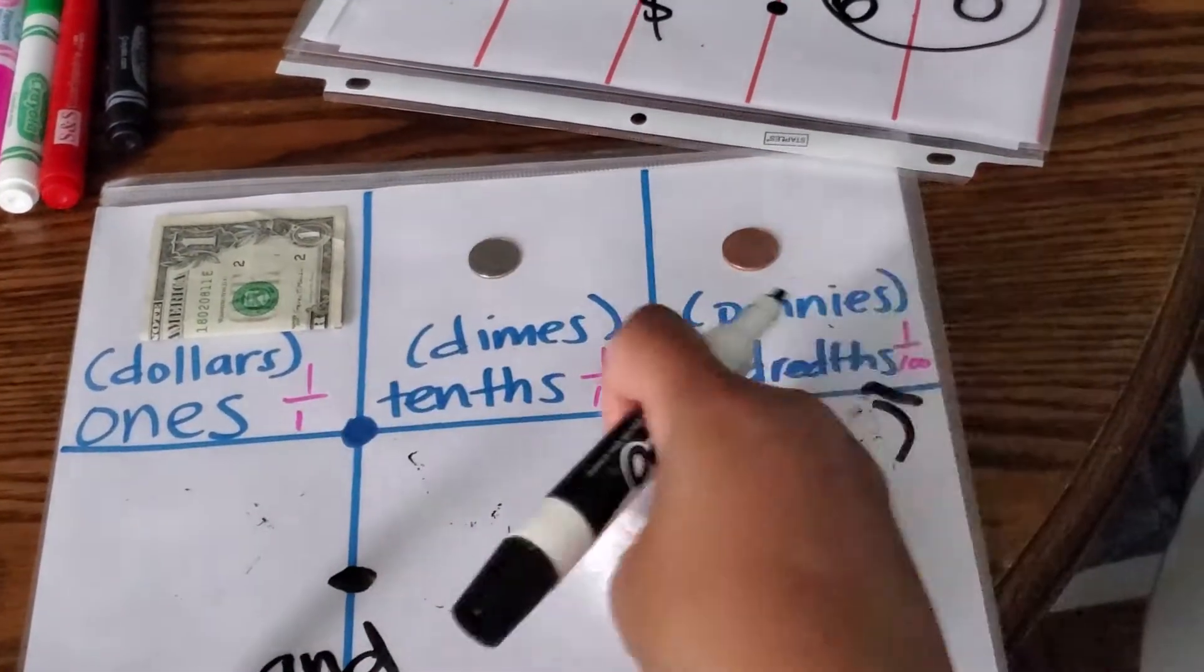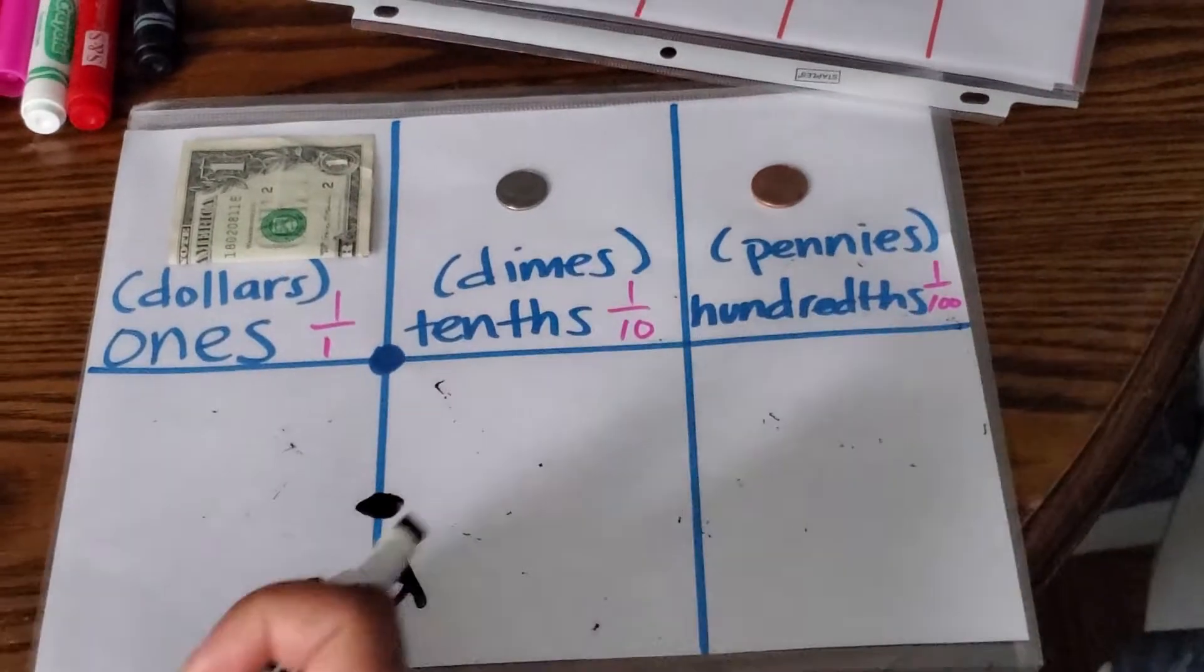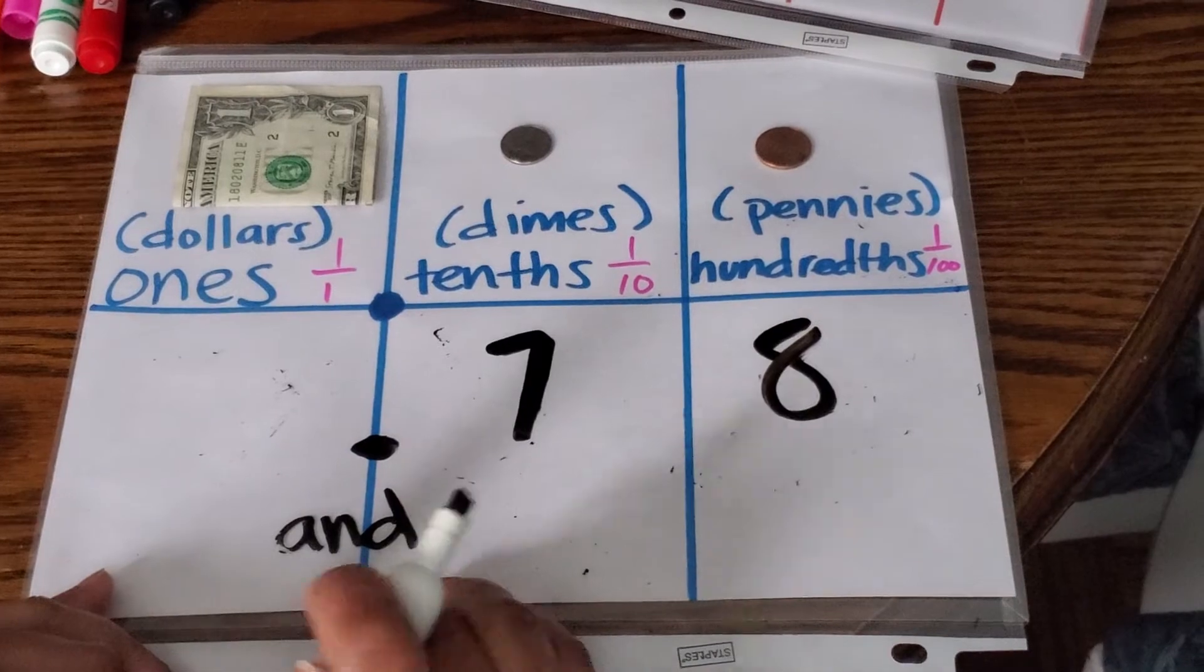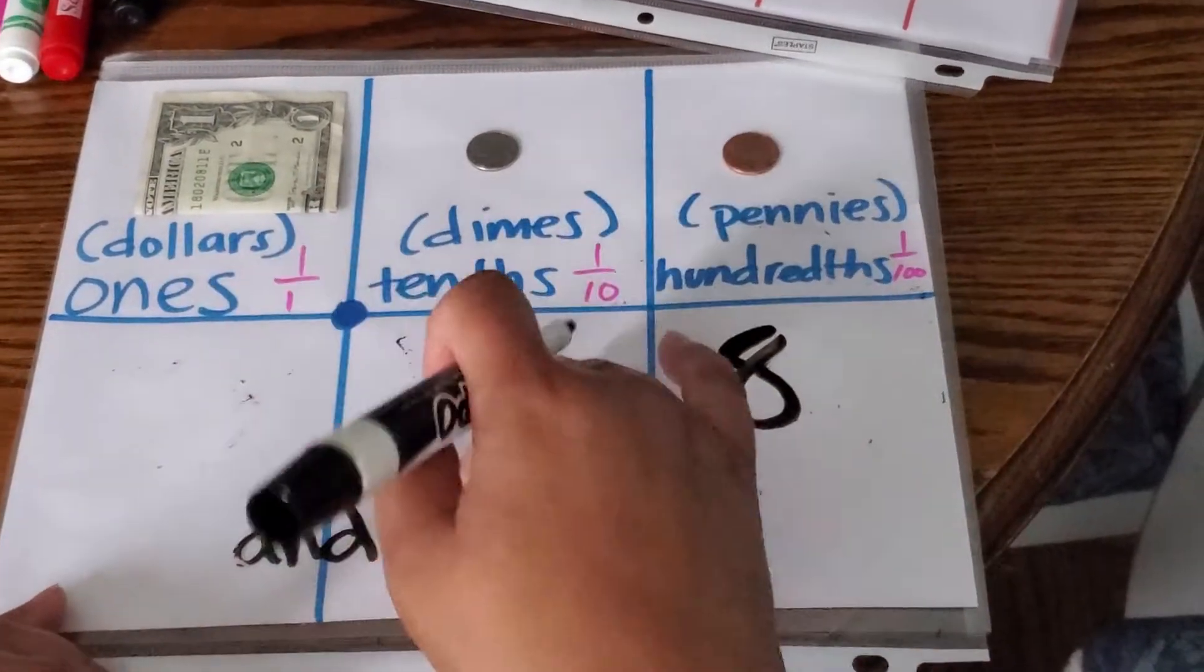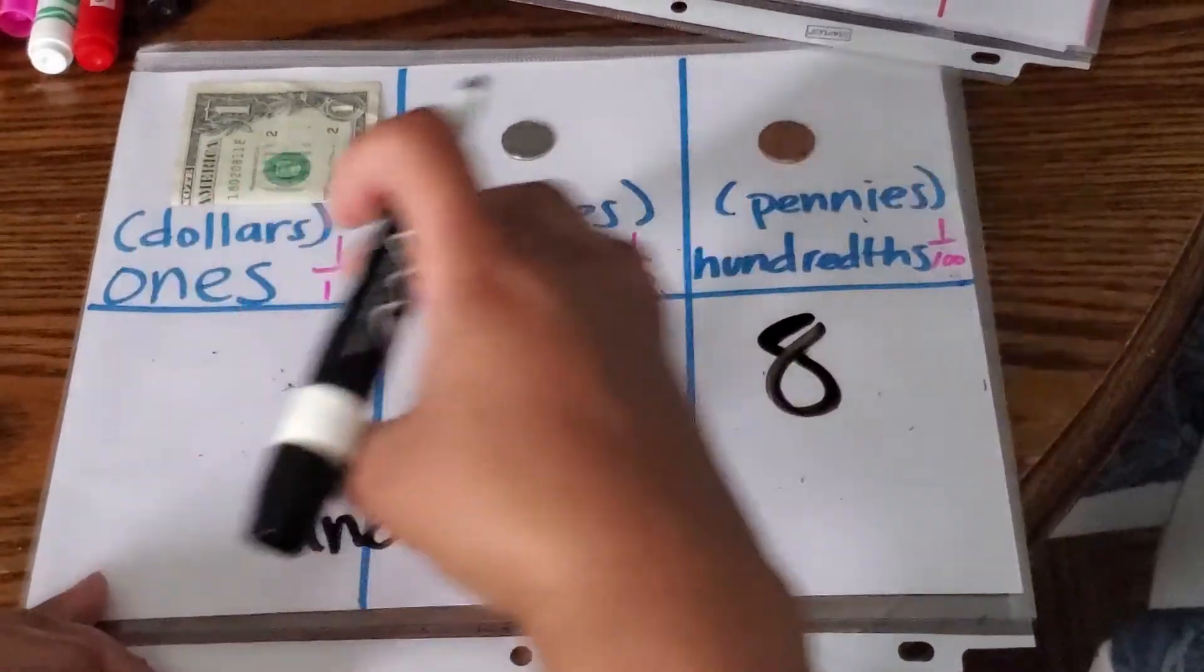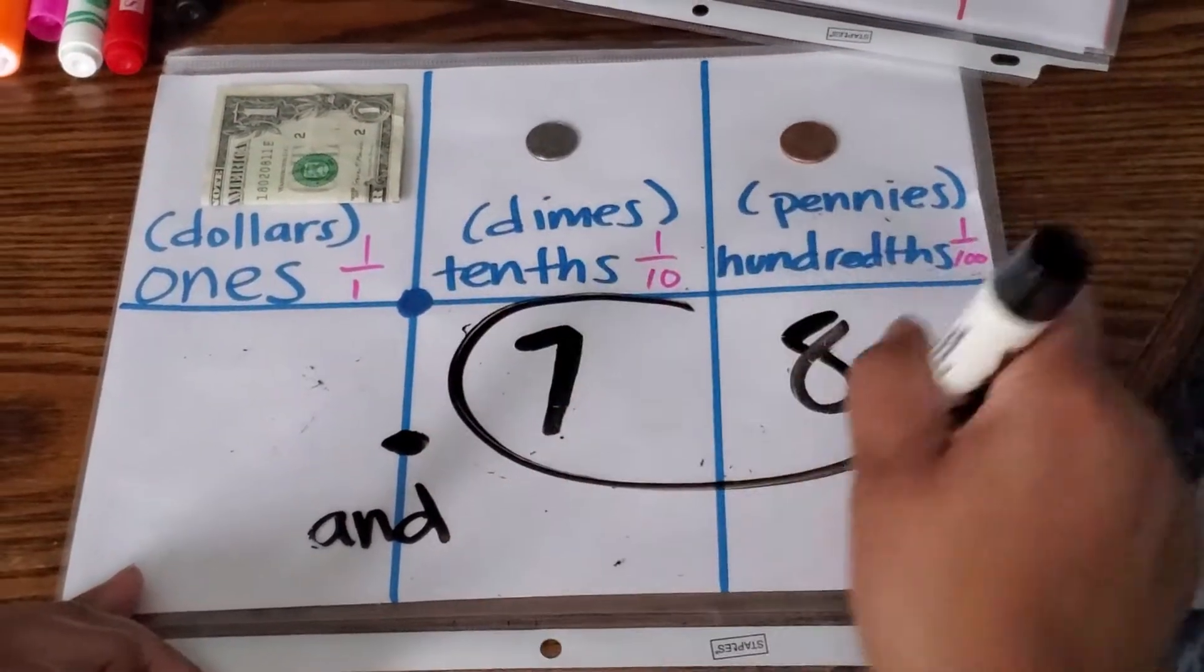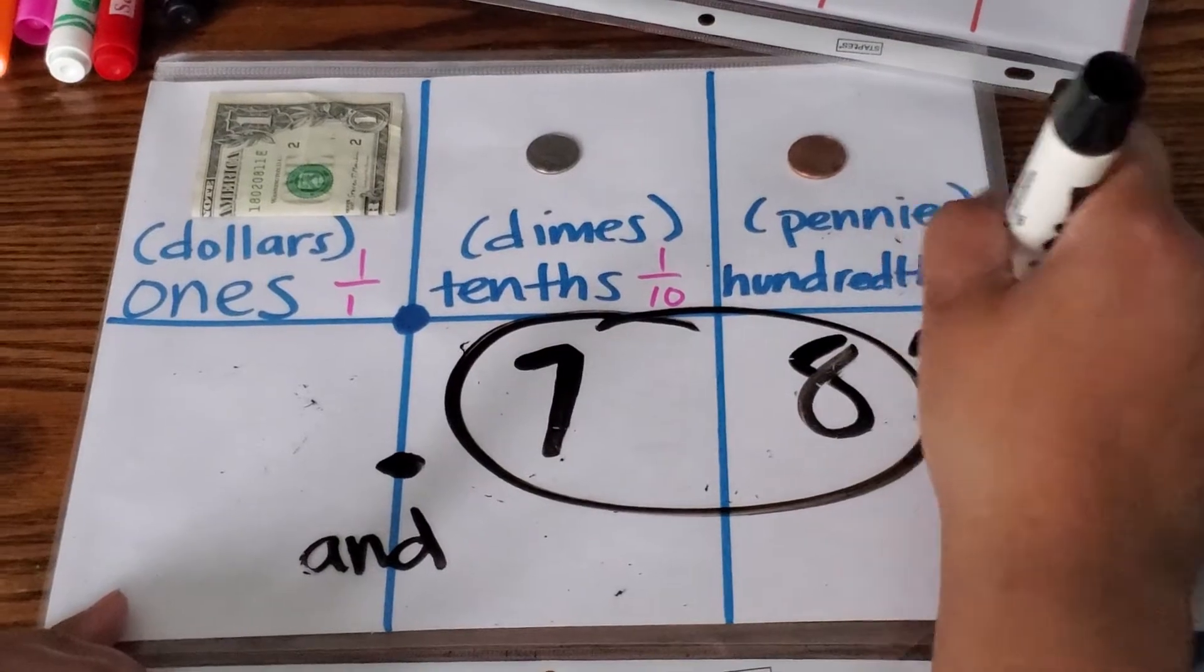Let's say you had no whole number. Let's just say you had seventy-eight here. You wouldn't need to say the and because there were no two parts. There was no whole and decimal. You would just say seventy-eight hundredths. You would link these two together and say seventy-eight hundredths.